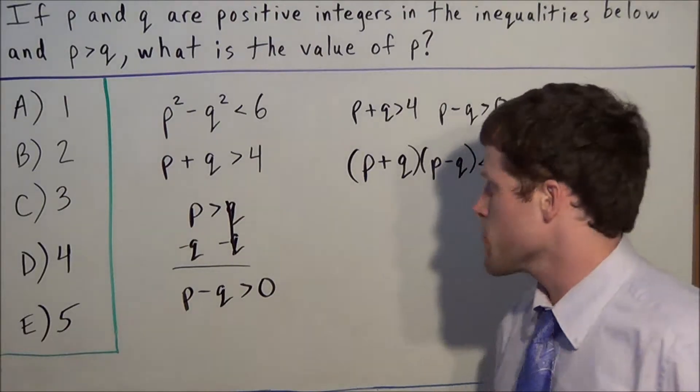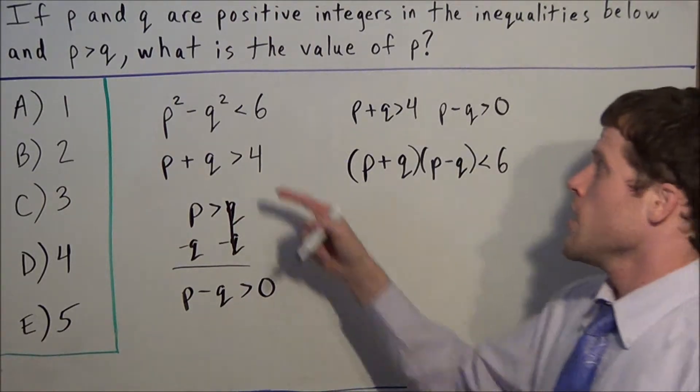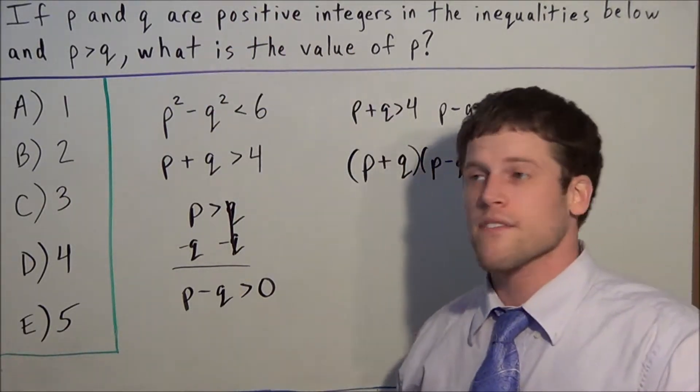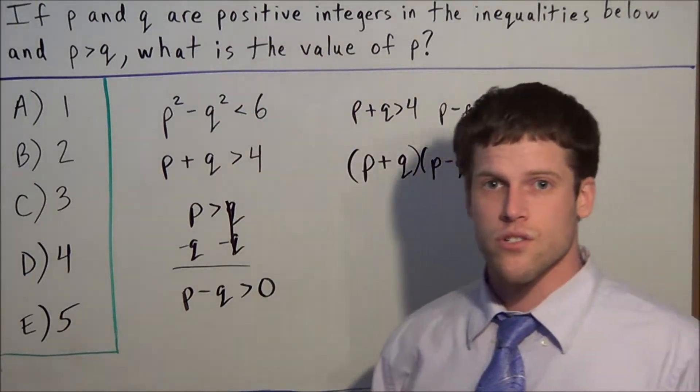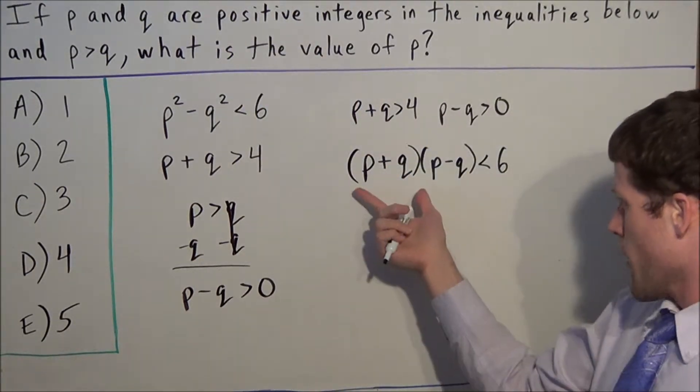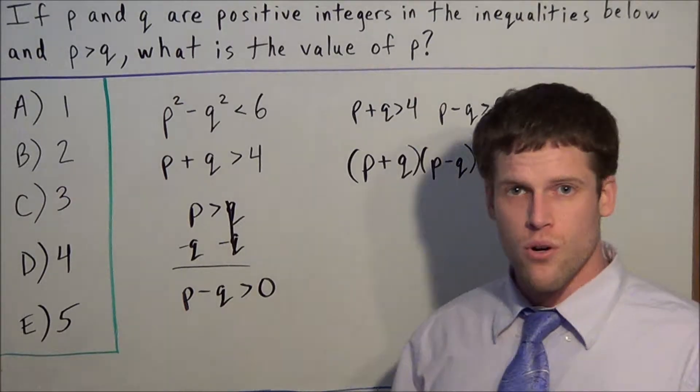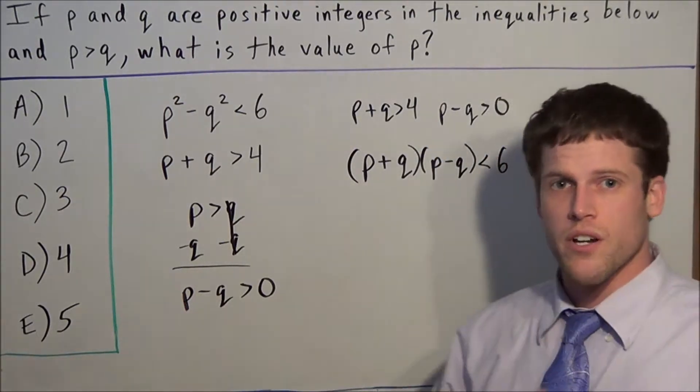Now we know specific information about both factors. But there's something else to consider: p and q are positive integers, which tells us that these factors must both be whole numbers. When you add whole numbers, you get another whole number.